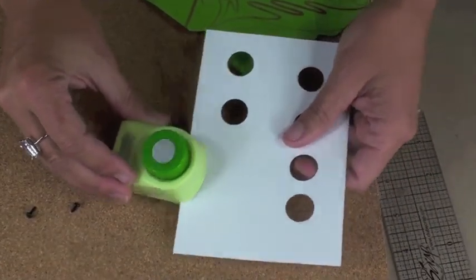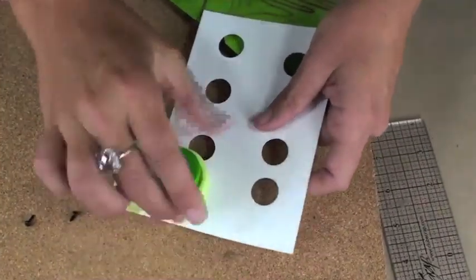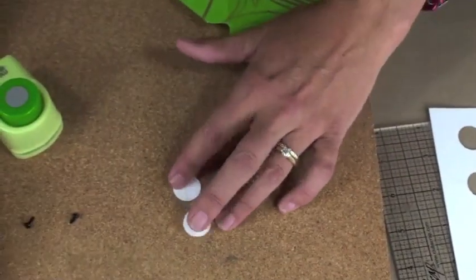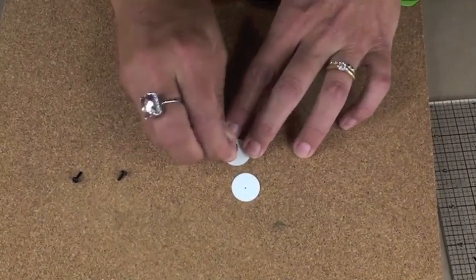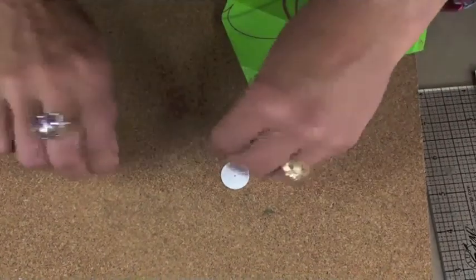Next, take a small circle punch and just punch two white circles. This paper is also from the Take Wing kit. Take that same piercing tool or push pin and create a small hole in the center of those circles.